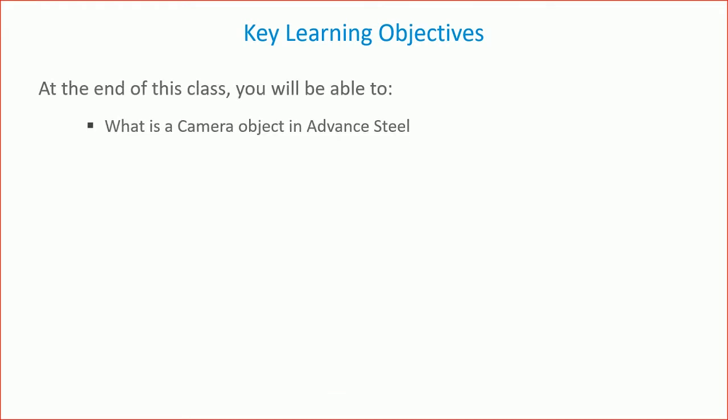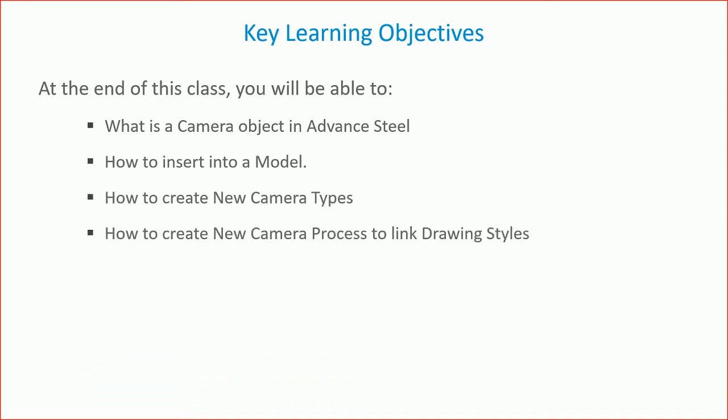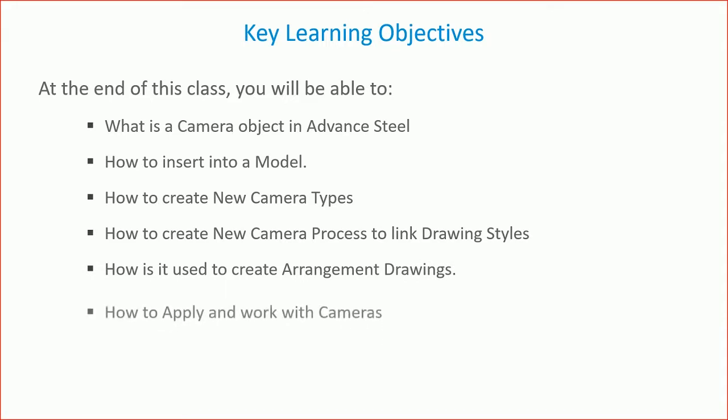We're going to explain what a camera is in Advanced Steel, how to place and position it in the model. We'll also go behind the scenes to show how to create new types, link them to a process, and show how to create arrangement drawings from the process and styles, along with methods to apply and work with cameras within Advanced Steel.